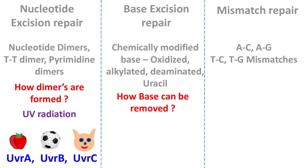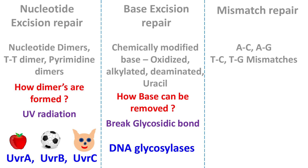In the case of Base Excision Repair, it removes the base, and the removal of the base is done by the breakage of the glycosidic bond. So the enzyme involved in this repair mechanism is DNA glycosylase.